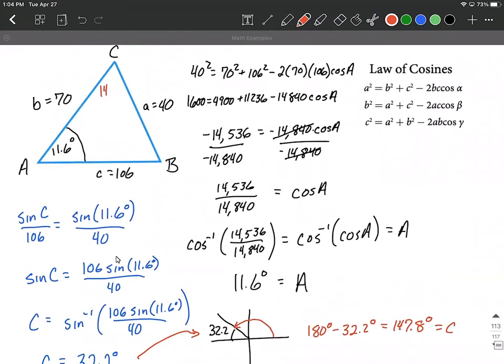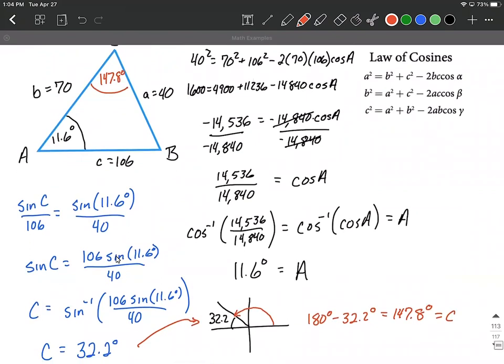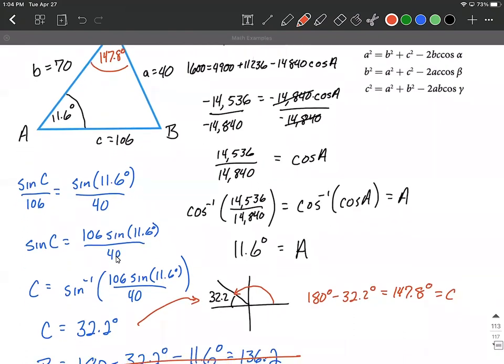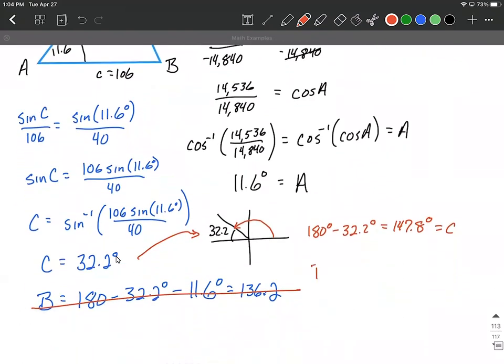147.8 degrees. All right. What remains is we still need to find angle B. So angle B can be calculated by taking 180 minus we said C was 147.8 minus angle A that we calculated up above is 11.6 degrees. So angle B works out to be 20.6 degrees.